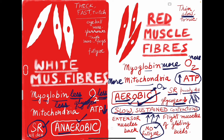In white muscle fibers, fatigue will occur and tiredness will set in, because lactic acid is produced due to anaerobic respiration. White muscle fibers produce fast contractions — the muscle will twitch quickly. However, these contractions are not sustained for long; they are momentary and of short duration.